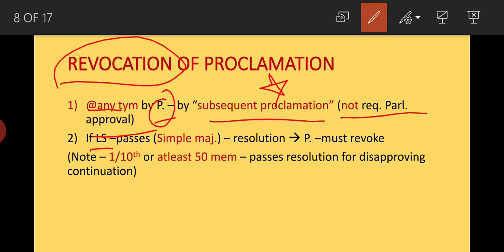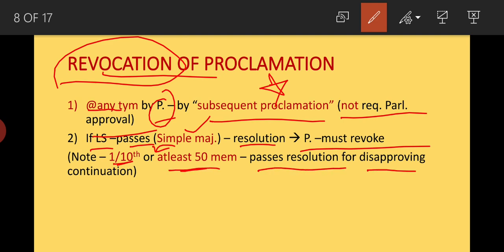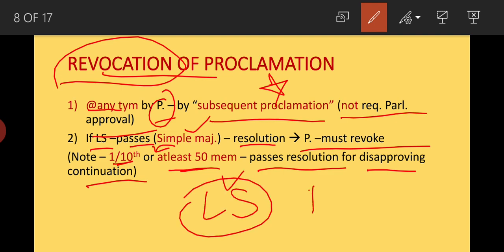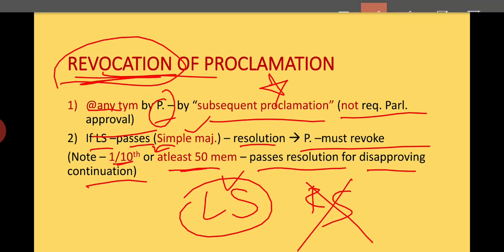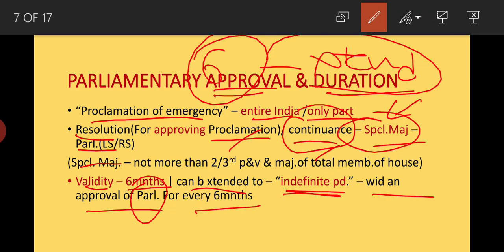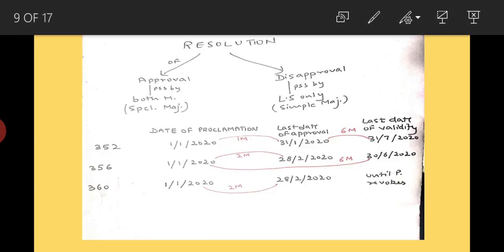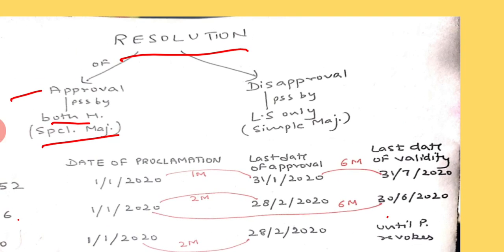The second case for revocation: if Lok Sabha passes a resolution by simple majority to revoke the emergency, then the President must revoke it. Simple majority means at least 50 members of Lok Sabha pass the resolution disapproving the continuation. Only Lok Sabha passes the resolution for revocation — Rajya Sabha is not needed for revocation. But for declaring and approving the emergency, both Houses of Parliament are needed with special majority.